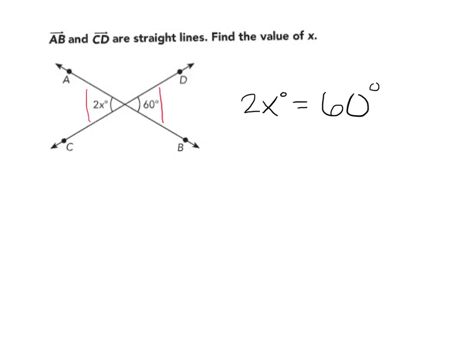To find X, I need to get X by itself. I'll divide by 2, because 2 divided by 2 gives me 1, so I have 1X.